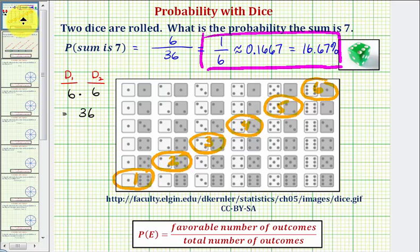Theoretically, because our probability was 1/6, this means if we roll the dice six times, we would expect to have a sum of seven one time. One favorable outcome for every six total outcomes. I hope you found this helpful.